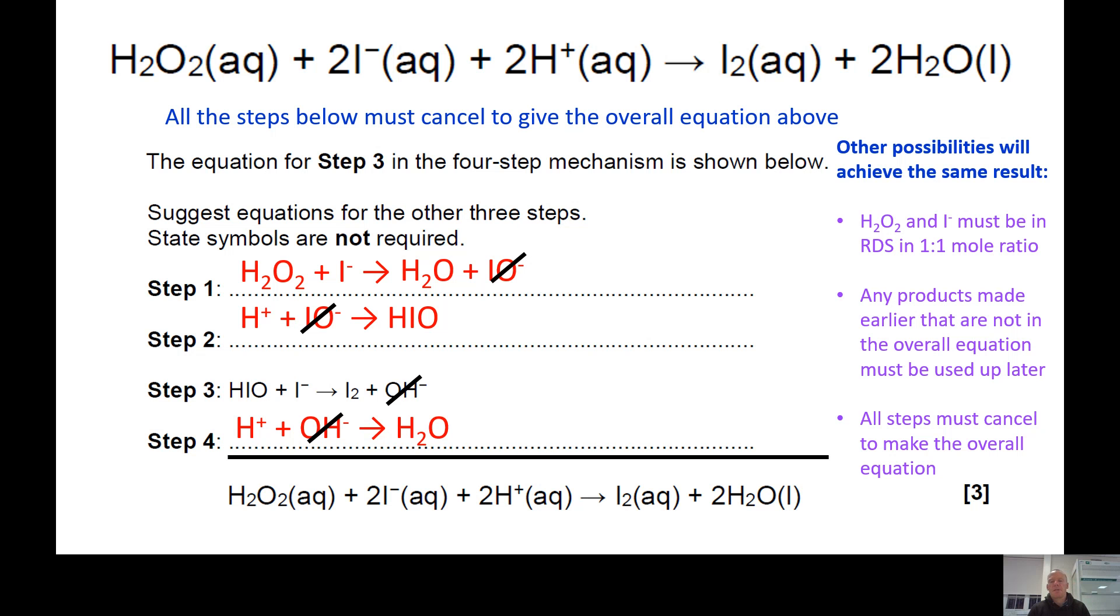There are other possibilities that will achieve the same result, but you have to have H2O2 and I- in the rate determining step in a one-to-one mole ratio. Any products that are made earlier on that are not in the overall equation need to be used up later on somewhere. And all the steps need to cancel out to make the overall equation that the question provided you with.